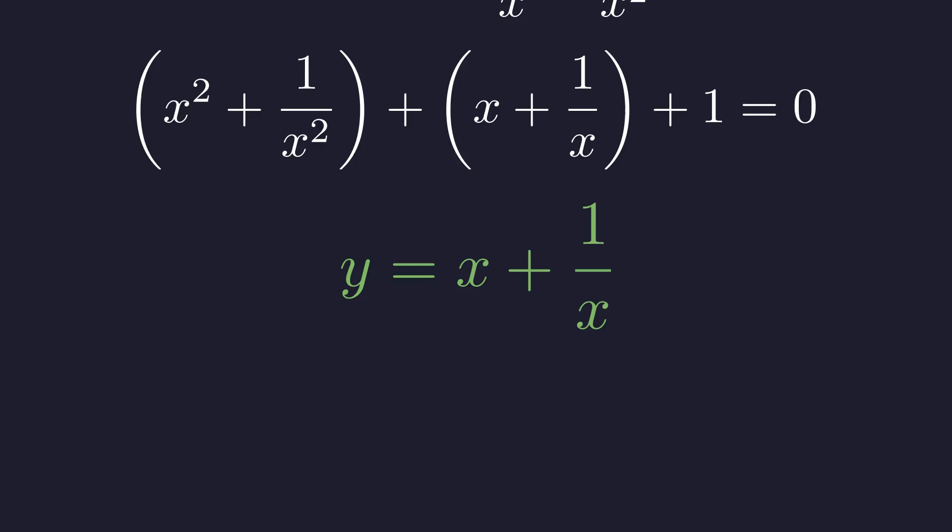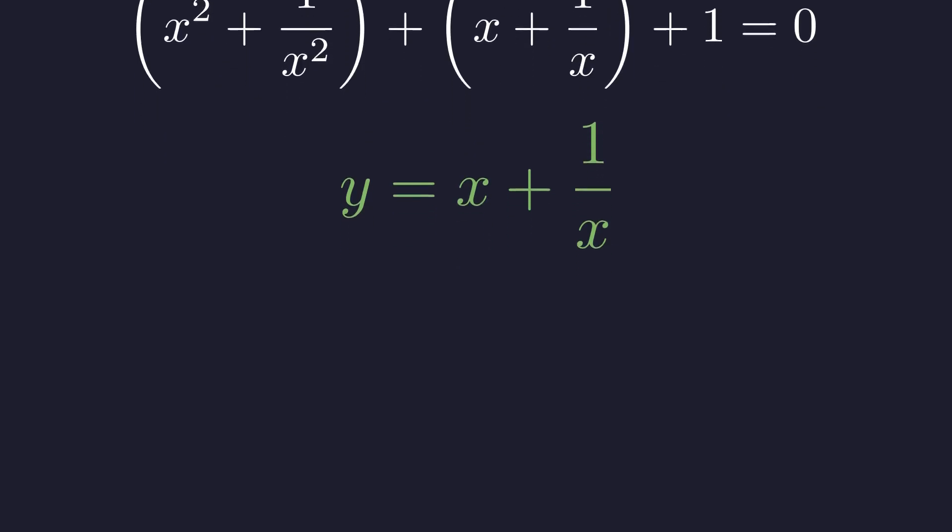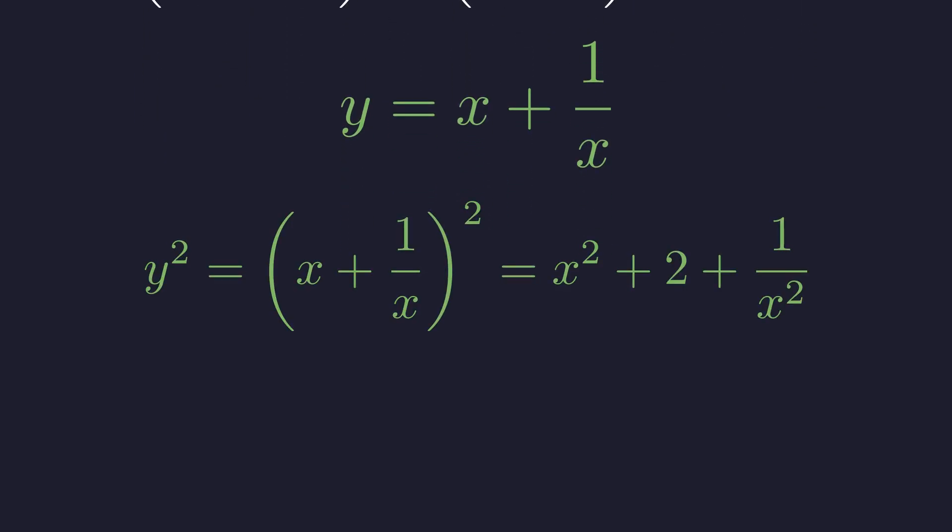Here comes the key substitution. Let y equal x plus 1 over x. This captures the reciprocal symmetry we just identified. Why does this substitution work? The key insight is that our polynomial has palindromic coefficients, one, one, one, one, one. This symmetry forces the roots to come in reciprocal pairs. Why does this work? Because y captures the essential symmetry of our reciprocal equation.